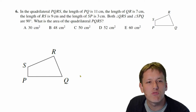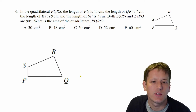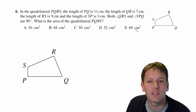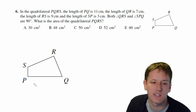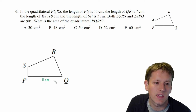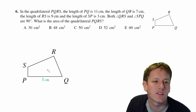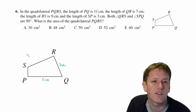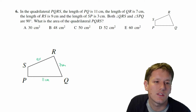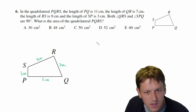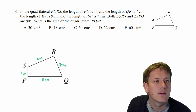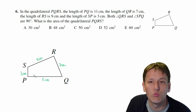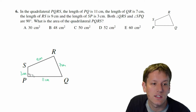In question 6 we've got a quadrilateral PQRS and we're told that the length of PQ is 11 centimetres. QR is 7 centimetres. The length of RS is 9 centimetres and the length of SP is 3 centimetres, and we're also told that angles QRS and SPQ are right angles.